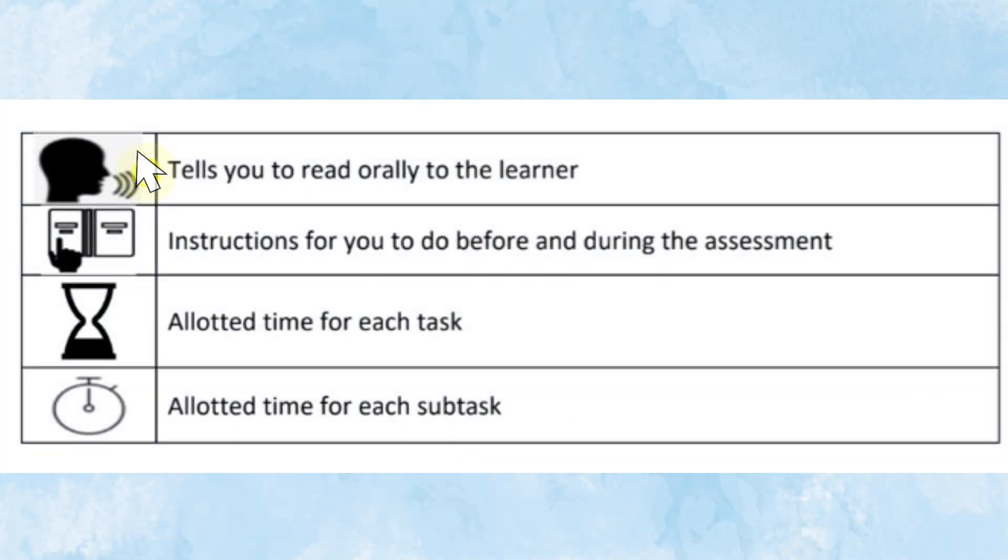The first icon tells you to read orally to the learner. The second one is an instruction for you to do before and during the assessment. The third one means allotted time for each task, and the last one means allotted time for each sub-task.